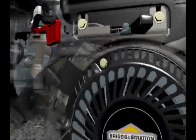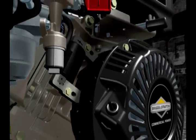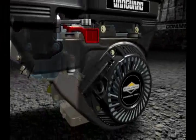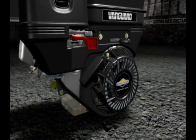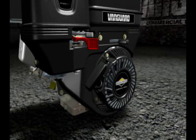Vanguard features a larger ignition coil that requires lower RPMs to spark. That means you can pull the rewind slower and easier, and the engine still fires up quickly and consistently.